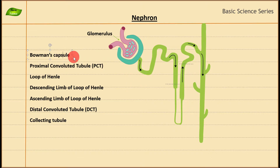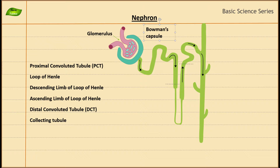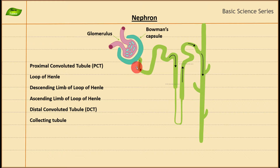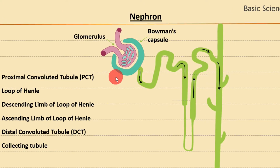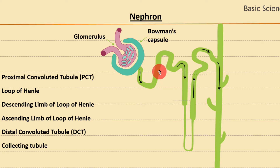Moving on to Bowman's capsule — as the name indicates, it's a capsule. You can easily see the cup-shaped structure, which is the Bowman's capsule. Important points: it is a double-walled cup made up of two cellular walls. The inner membrane is formed of specialized cells called podocytes, and the outer layer is made up of epithelial cells. So if someone asks you about podocytes, you can easily answer that question.